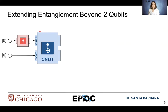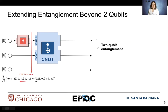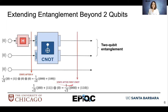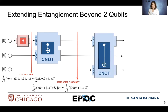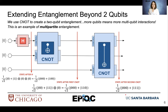Here we have our circuit that generates same entanglement without phase, and we use a CNOT gate to extend this. After the H gate, our first qubit is in superposition. However, the last qubit is not yet entangled with the other two. If we add a second CNOT gate, we can create a fully entangled three-qubit state — this is an example of multipartite entanglement. To summarize, we can use additional CNOTs to entangle more qubits.